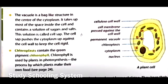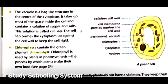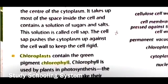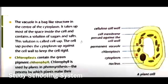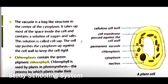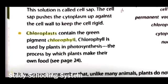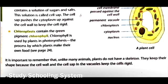'A plant cell has a vacuole, which is a bag-like structure in the center of the cytoplasm. It takes up most of the space inside the cell and contains a solution of sugars and salts called cell sap. The cell sap pushes the cytoplasm up against the cell wall to keep the cell rigid.' So in your plant cell you will find a cell wall and a vacuole — these two things are not found in an animal cell.